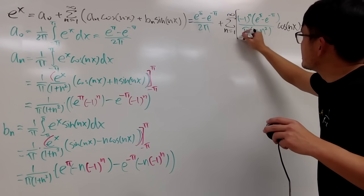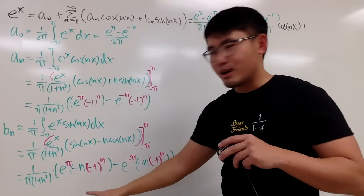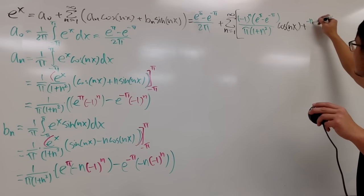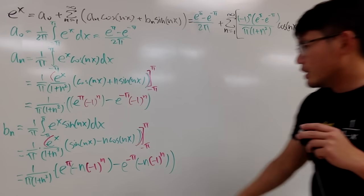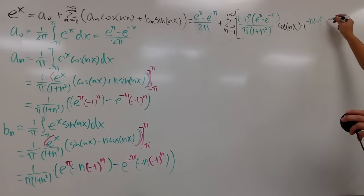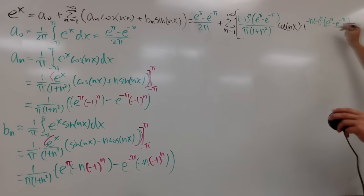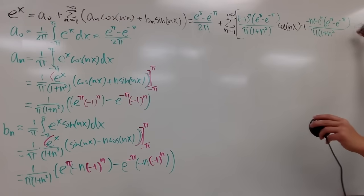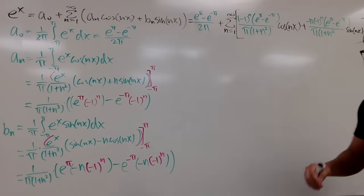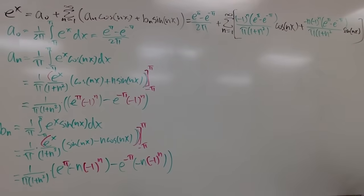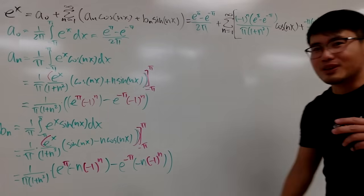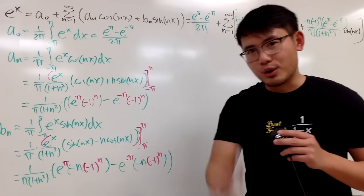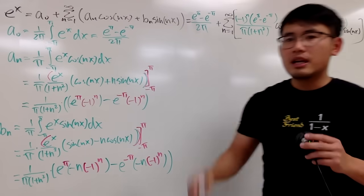For the bₙ·sin(nx) term, we factor out −n·(−1)^n, giving −n·(−1)^n · (e^π − e^(−π)) / [π(1 + n²)] · sin(nx). This is the Fourier series for e^x on the interval −π to π. Don't forget the parentheses of course!